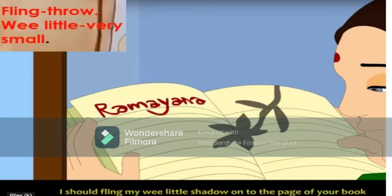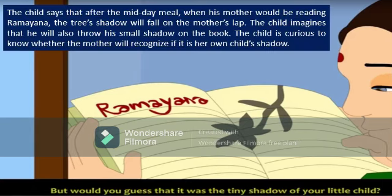When after the midday meal, you sat at the window reading Ramayana, and the tree's shadow fell over your head and your lap. The child said, 'I should fling my little shadow onto the page of your book.' Fling means throw; wee little means very small. But would you guess that it was the tiny shadow of your little child?